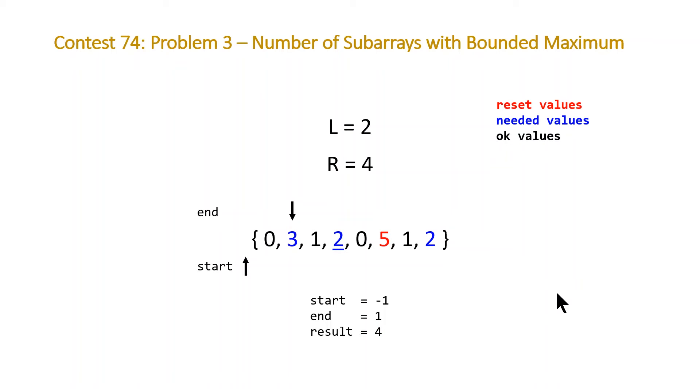Now we move to our next value, which is a needed value. At this point, we are going to reset end to our current index, which is going to be 3. We then do the same plus equals, but at this point, now we're going to be adding 4 because 3 minus negative 1 equals 4. So we end up with 8.